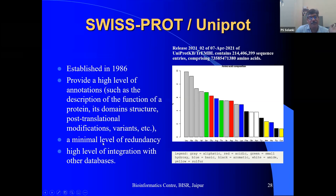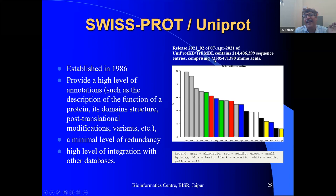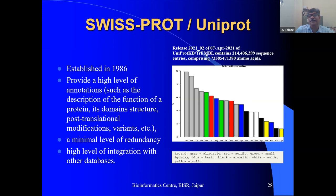SwissProt contains around 700,000 sequences — far fewer than the nucleotide database which holds billions. Since TrEMBL contains proteins translated from nucleotide sequences, the combined UniProt number is higher, but SwissProt alone contains roughly 700,000 to 1 million sequences. In comparison, the nucleotide database is in billions — you cannot compare billions with millions. This reflects the difficulty of experimentally confirming protein sequences at the level of annotation SwissProt requires.